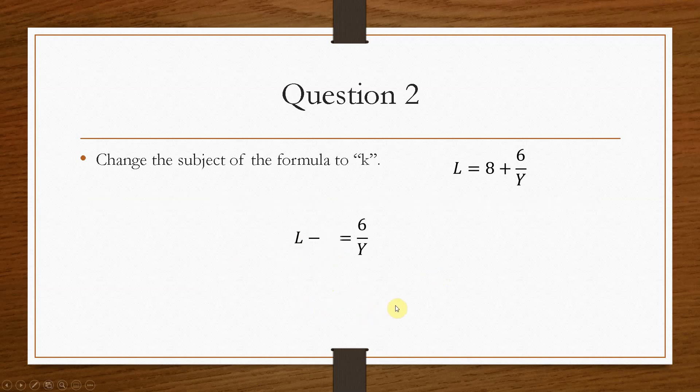The next step is we have to take the y across, because it is dividing by the 6. The y is dividing, so it must go over as times. Now we can group the l minus 8 in a bracket, because the y will multiply everything, the l and the minus 8. So we just group them in a bracket to make it a bit easier. This gives us the expression y bracket l minus 8 equals 6.